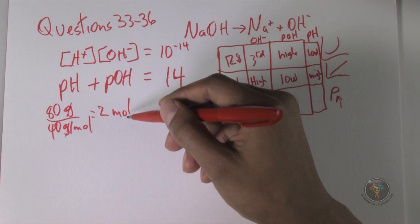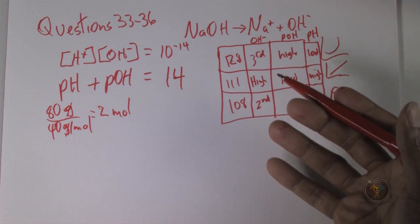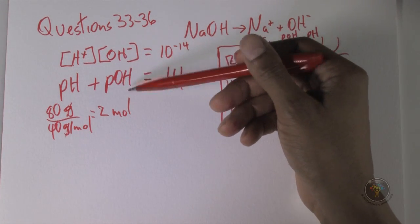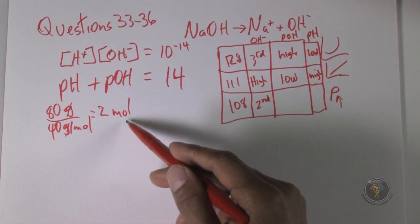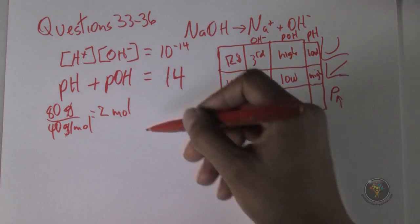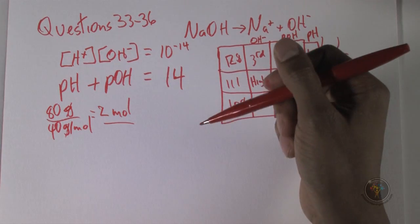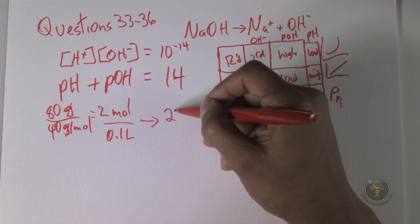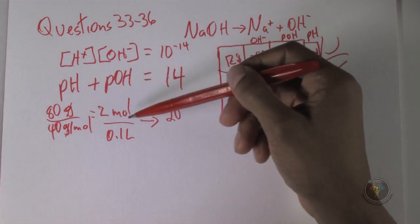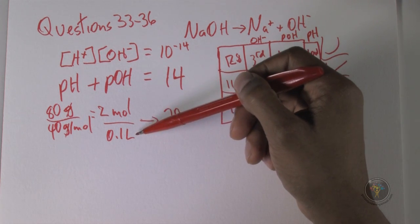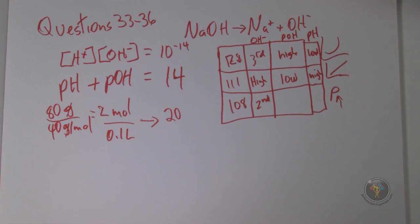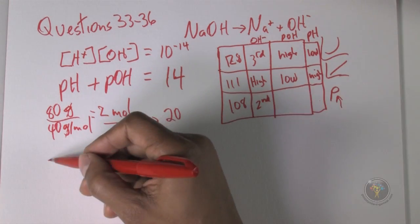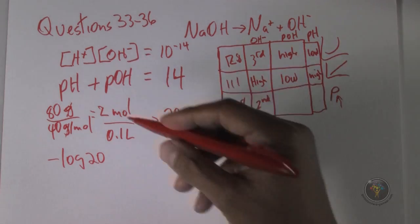We calculated 2 moles of NaOH. To find pH or pOH we need concentration in moles per liter. The volume is 100 mL = 0.1 L. So concentration = 2 moles ÷ 0.1 L = 20 mol/L. We now take the negative log of 20 to get pOH.